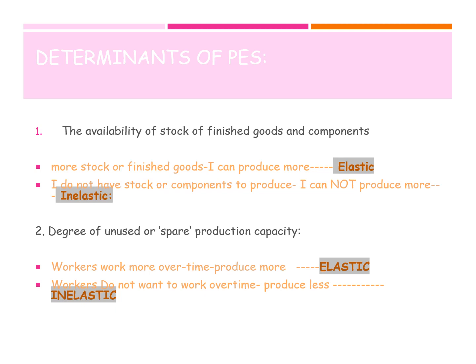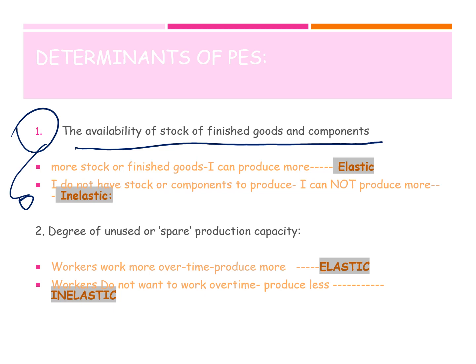What determines the factors or influences for PES? You can find this on page 80 of your book. The first reason is the availability of stock of finished goods and components. If you have more stock or finished goods, it means you can produce more — this tells you that the supply would be elastic. If on the other hand you do not have stock or components to produce, they do not have enough factors of production, enough materials, or enough inventory to produce more, then it is inelastic.